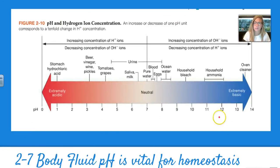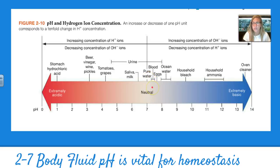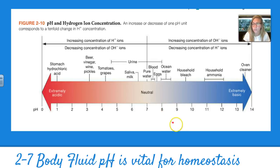pH is vital for homeostasis in the body. Looking at this chart, you can see that blood pH is between 7 and 8 — but the range blood can actually be at is very, very small. If your blood pH gets less than 7, you would actually go into a coma.